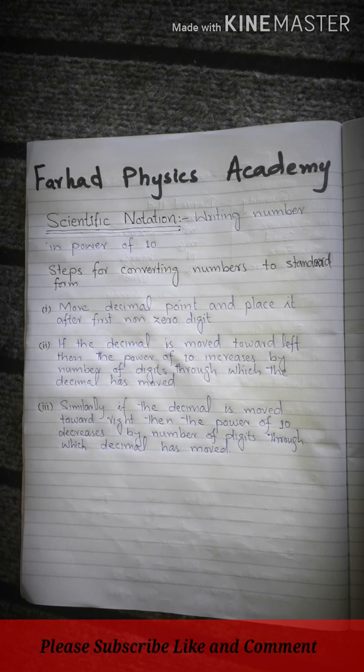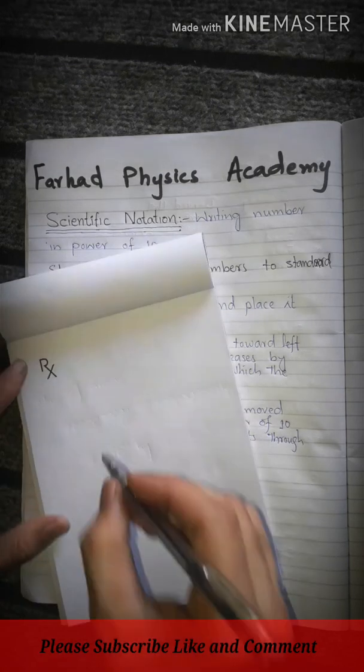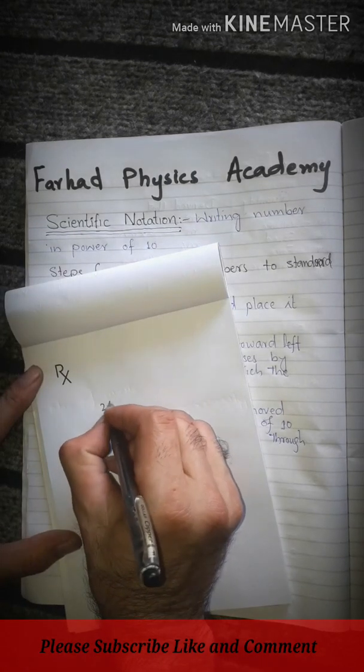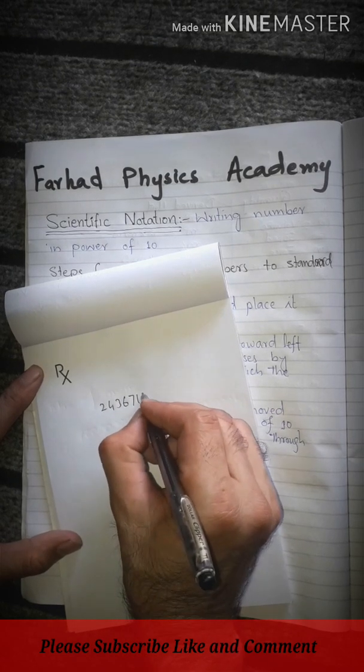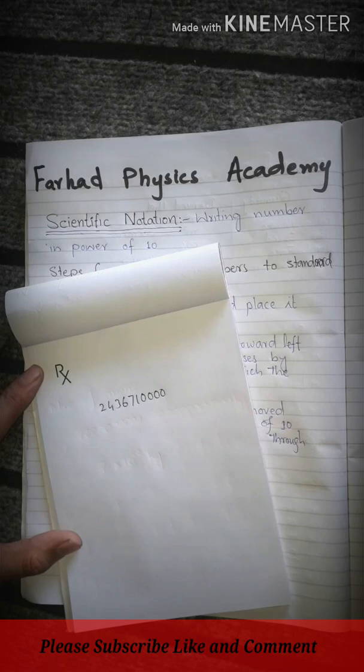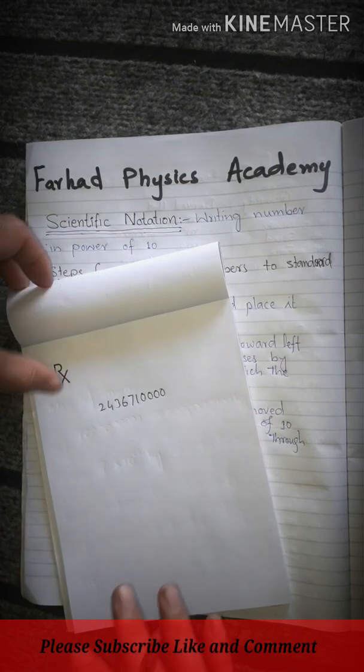It can be written like this: 2, 4, 3, 6, 7, 0, 0, 0, 0, 0, 0. This is a number. We will write it in scientific notation.